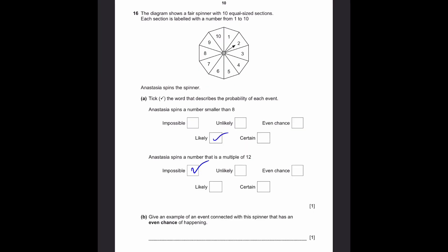B. Give an example of an event connected with the spinner that has an even chance of happening. So that means we need a number which has probability of half. So for example, we can say choosing an even number. You can also say choosing an odd number. Or even, you can say choosing a factor of 12, because there's 1, 2, 3, 4, and 6, which is 5 out of 10, which is equal to 1 by 2. For even and odd numbers, it's also the same thing, 5 by 10, 1 by 2. So any one of these answers correct, that's the answer.